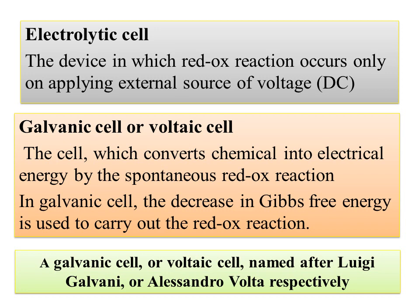The galvanic cell decreases in the free energy used to carry out the redox reaction. There is a decrease in the free energy. The galvanic cell and the voltaic cell are named after Galvani and Volta.